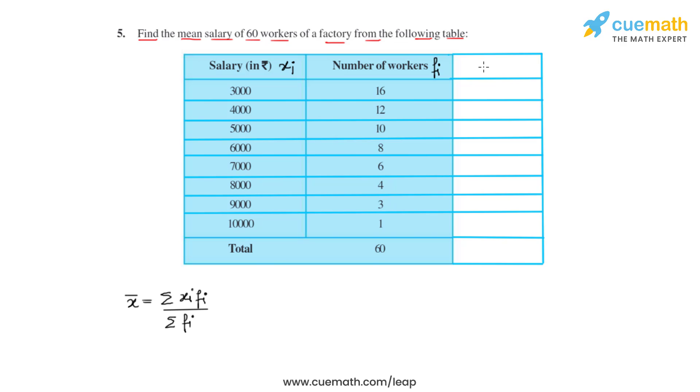We write Xi Fi here and now when we start multiplying, three thousand times sixteen we get forty eight thousand, four thousand times twelve again gives us forty eight thousand, five thousand times ten we get fifty thousand, likewise we get forty eight thousand.